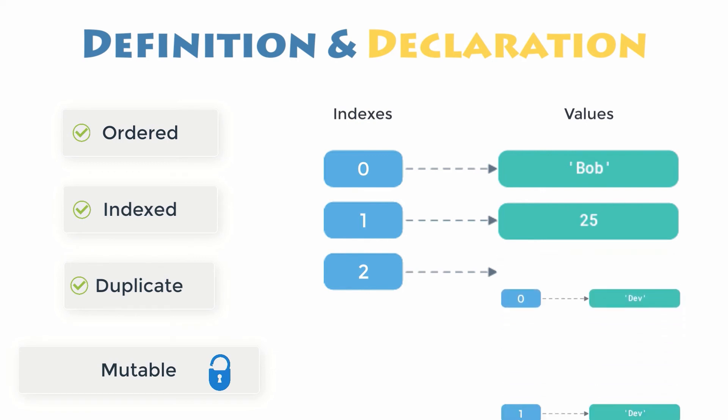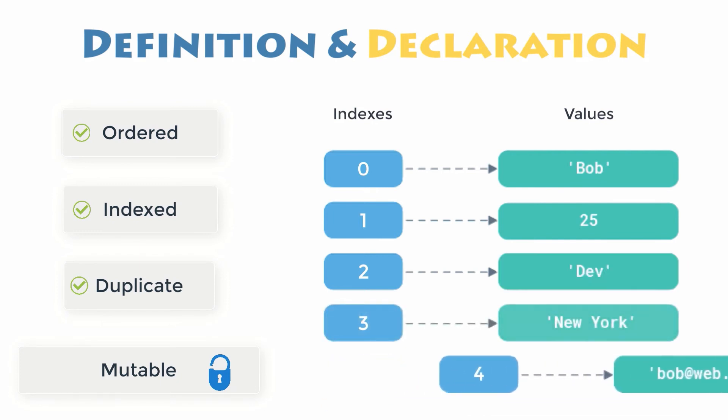Lists can contain any sort of object: numbers, strings, tuples, and even other nested lists. Lists are dynamic—you can change a list in place, add new items, and delete or update existing items.